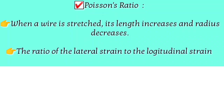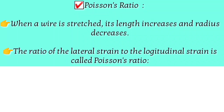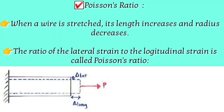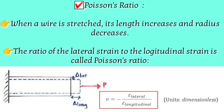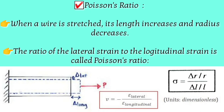Poisson's ratio: when a wire is stretched, its length increases and its radius decreases. The ratio of lateral strain to longitudinal strain is called Poisson's ratio. When you apply force on a rod, the length increases but the radius decreases. The ratio of how much the radius decreased to how much the length increased is the Poisson's ratio.